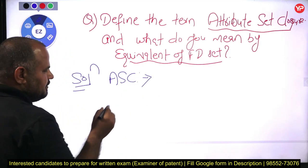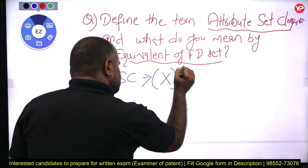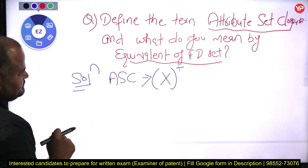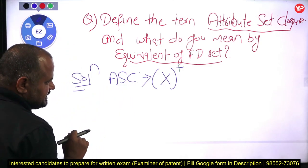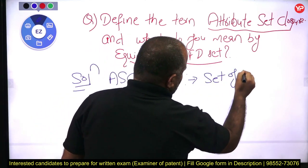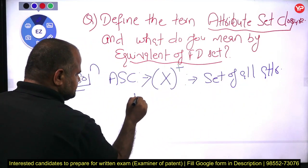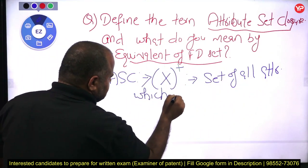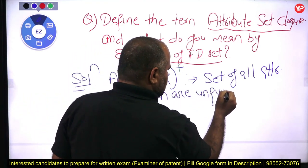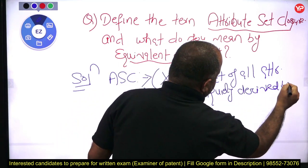What do you mean by attribute set closure? Basically, we define attribute set closure with the sign X+. It is the set of all attributes which are uniquely derived by X.